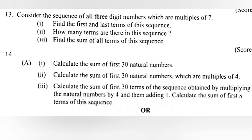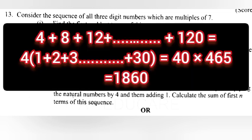2. Calculate the sum of first 30 natural numbers which are multiples of 4. Answer: 4 into 1 plus 2 plus 3 plus etc. 30 equal 4 into 465 equal 1860.